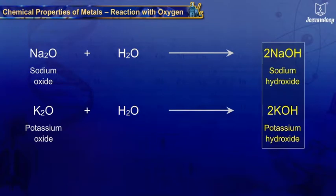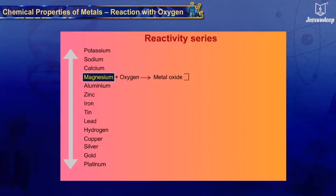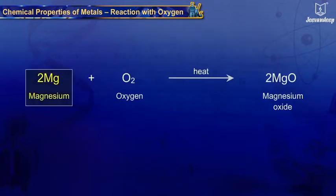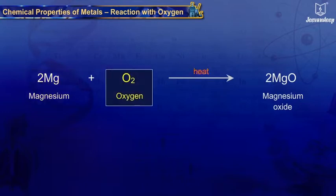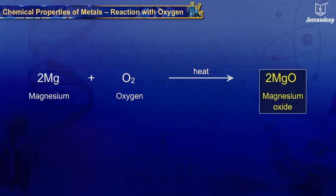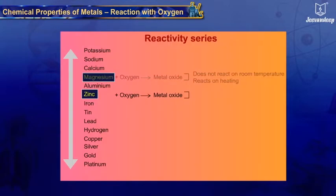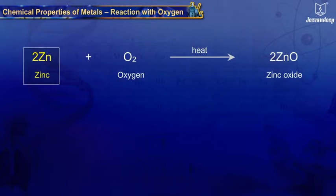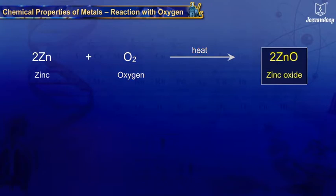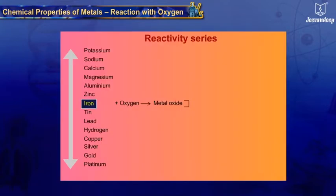Metal oxides are basic in nature. Magnesium does not react with oxygen at room temperature; it reacts with oxygen on heating and burns with intense light and heat, forming magnesium oxide. Like magnesium, zinc does not react with oxygen at room temperature; it reacts with oxygen on strong heating, forming zinc oxide.